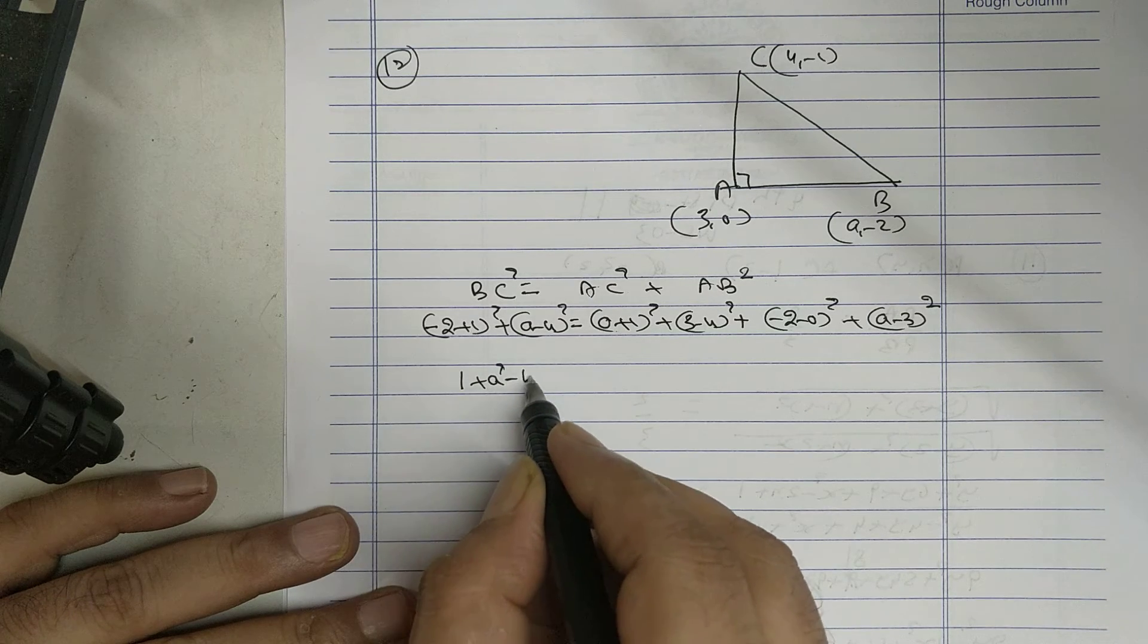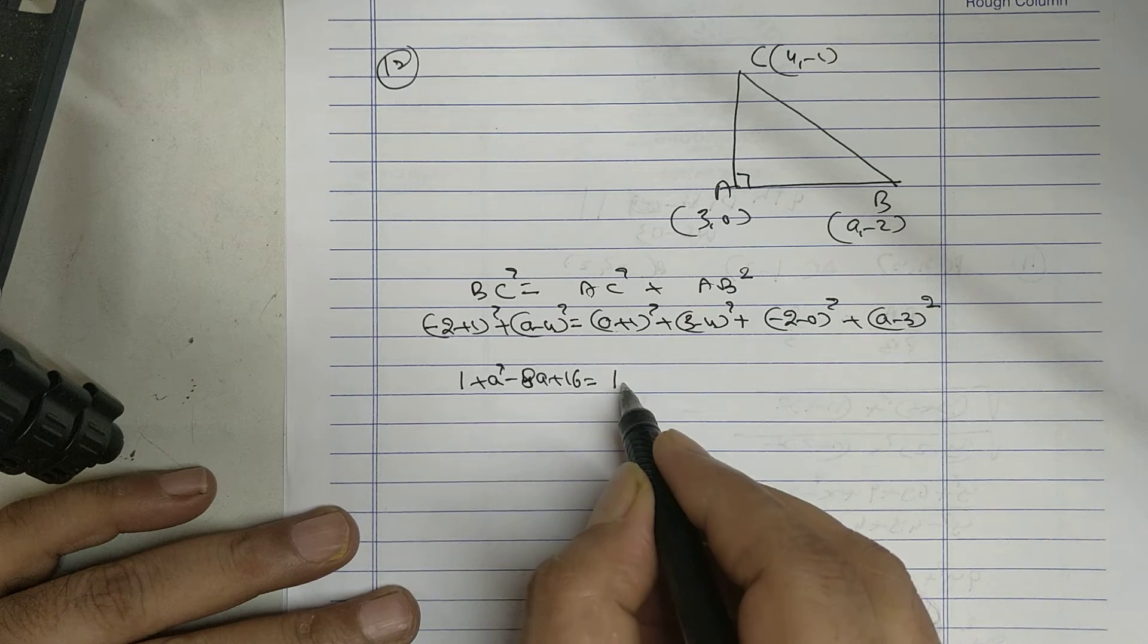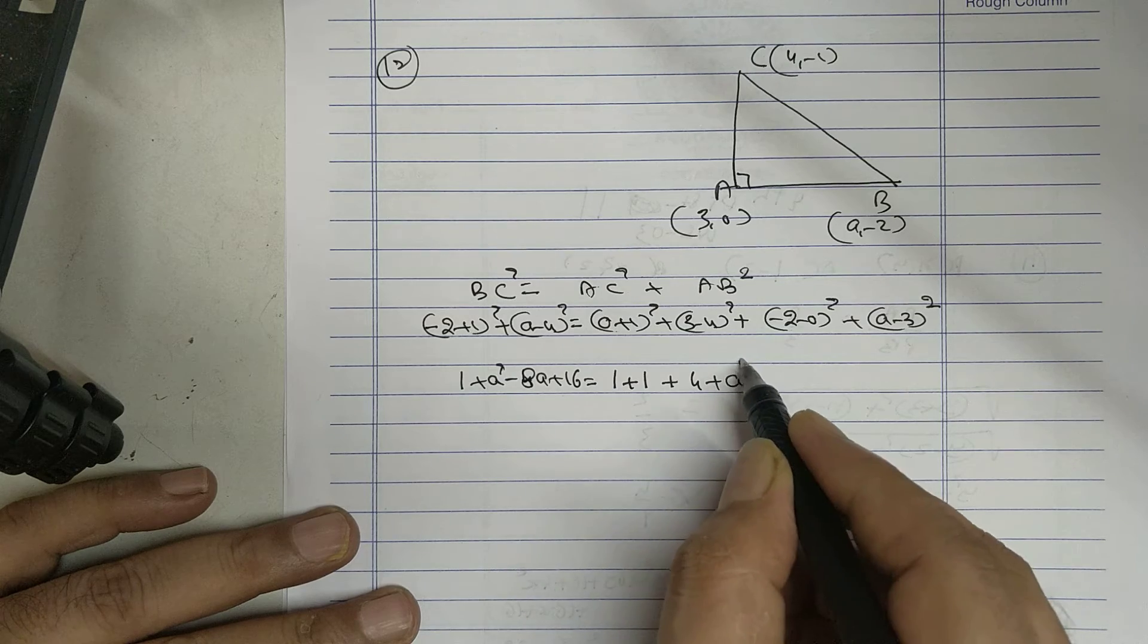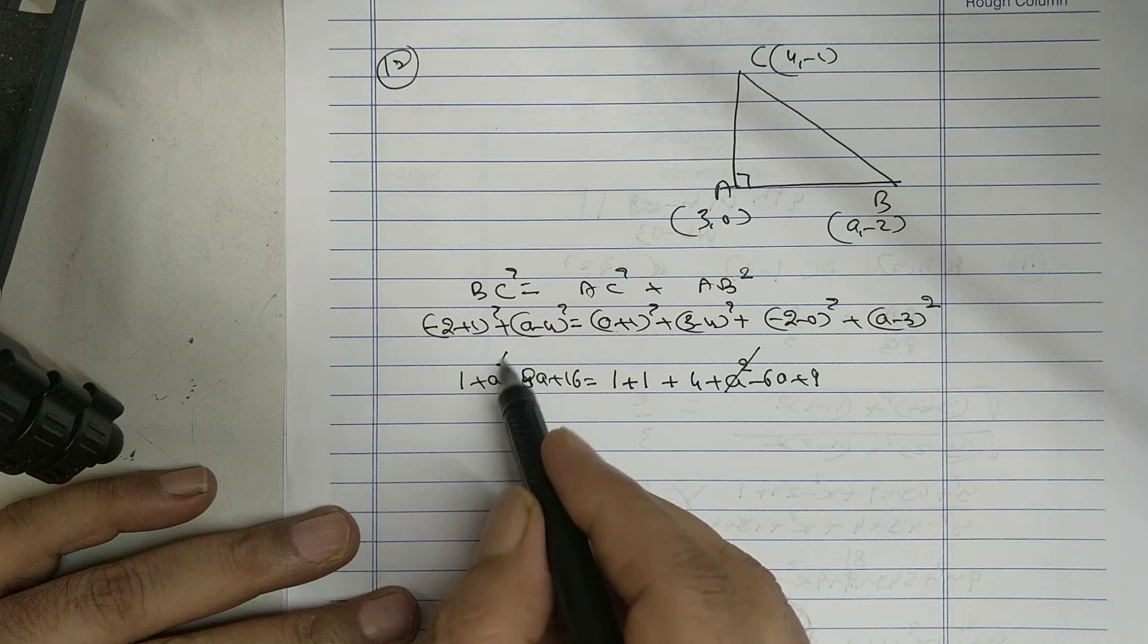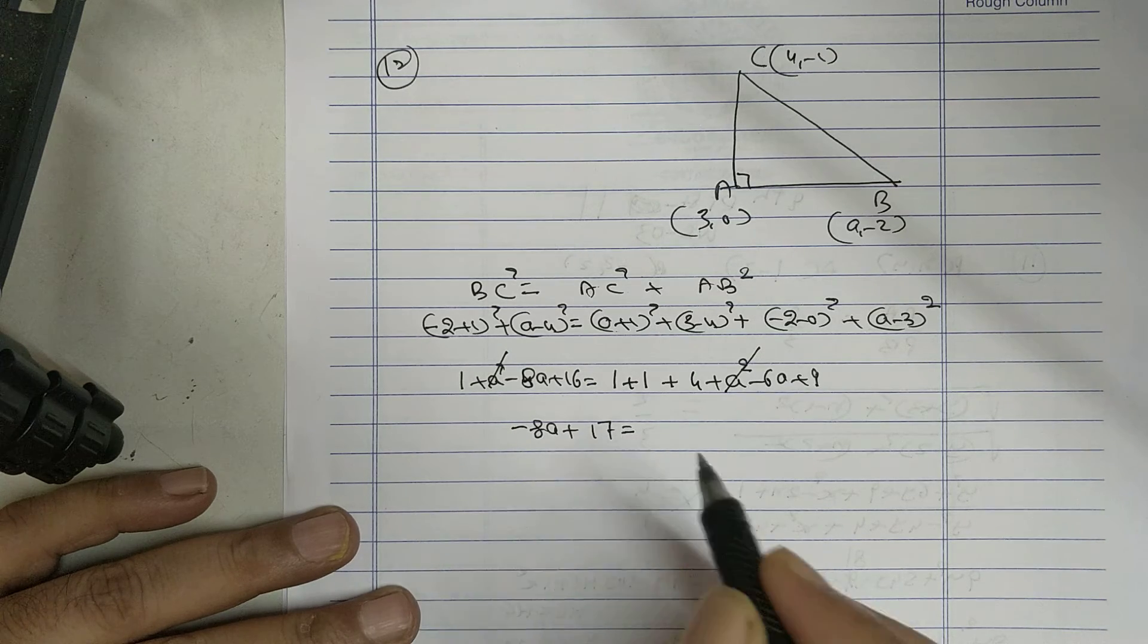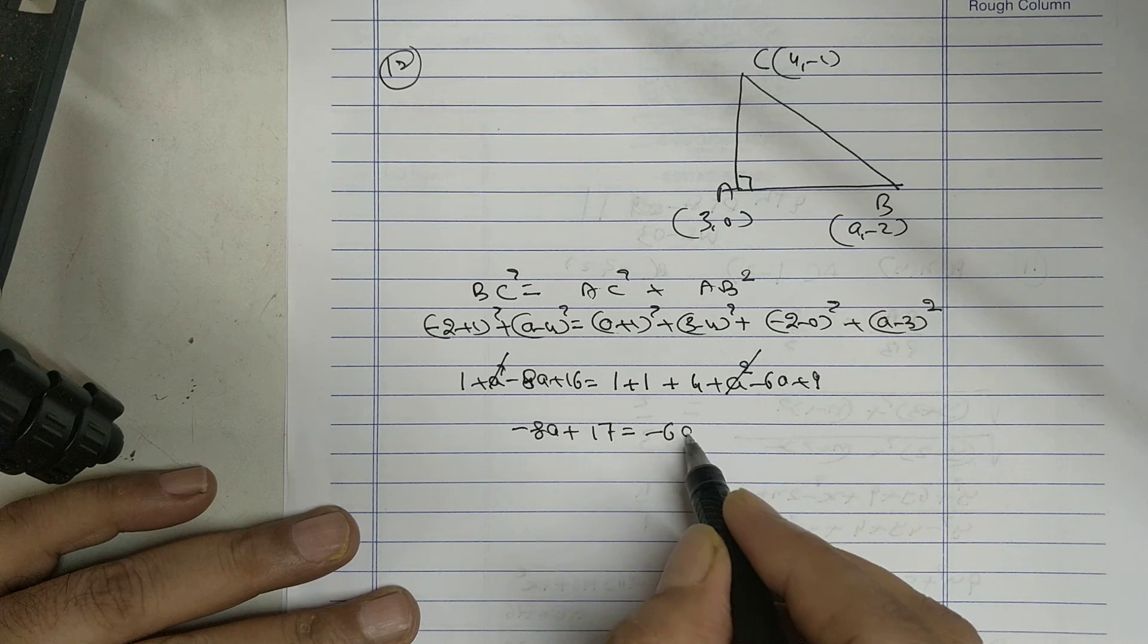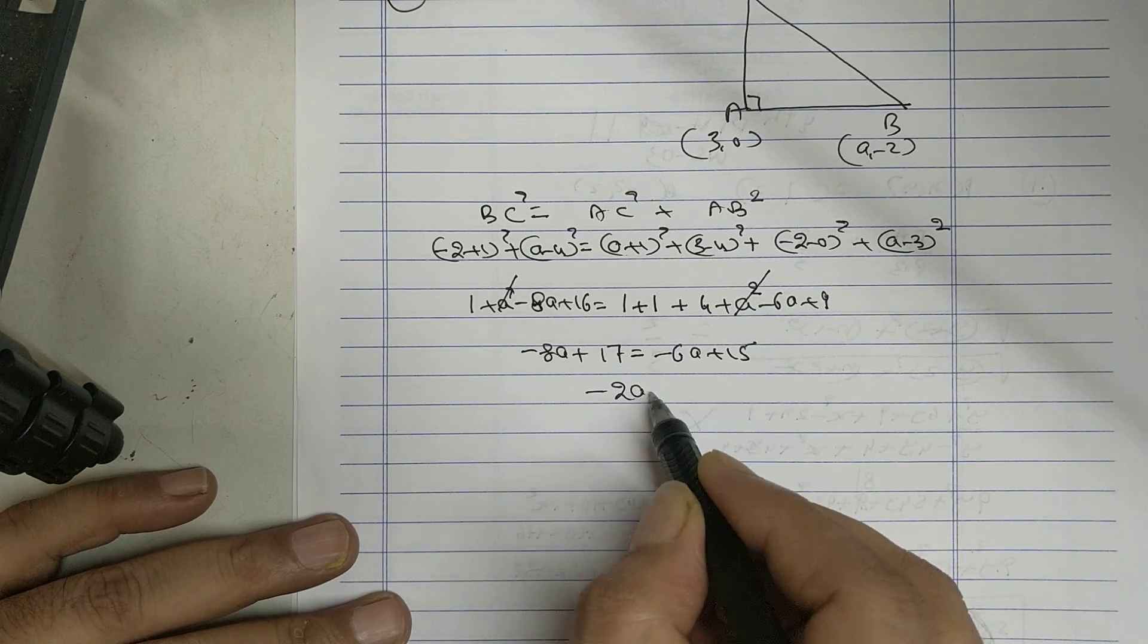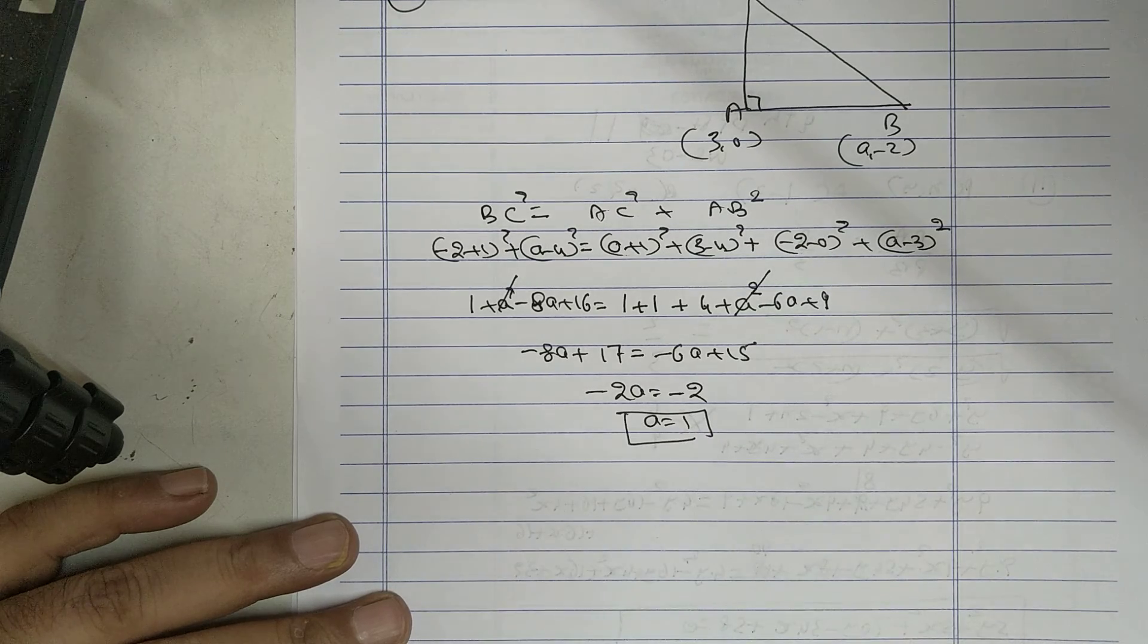A square minus 8A plus 16, 1 plus 1 plus A square minus 6A plus 9 minus 8A plus 17 equal to minus 6A plus 15, minus 2A equal to minus 2, A equal to 1.